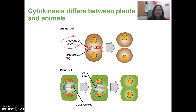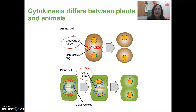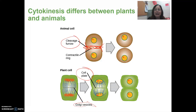In plant cells, you're going to see the formation of a cell plate. That cell plate is formed by vesicles pinched off from the Golgi apparatus — Golgi vesicles actually form that cell plate. Eventually the cell plate will develop into the cell wall and you will have two separate plant cells.